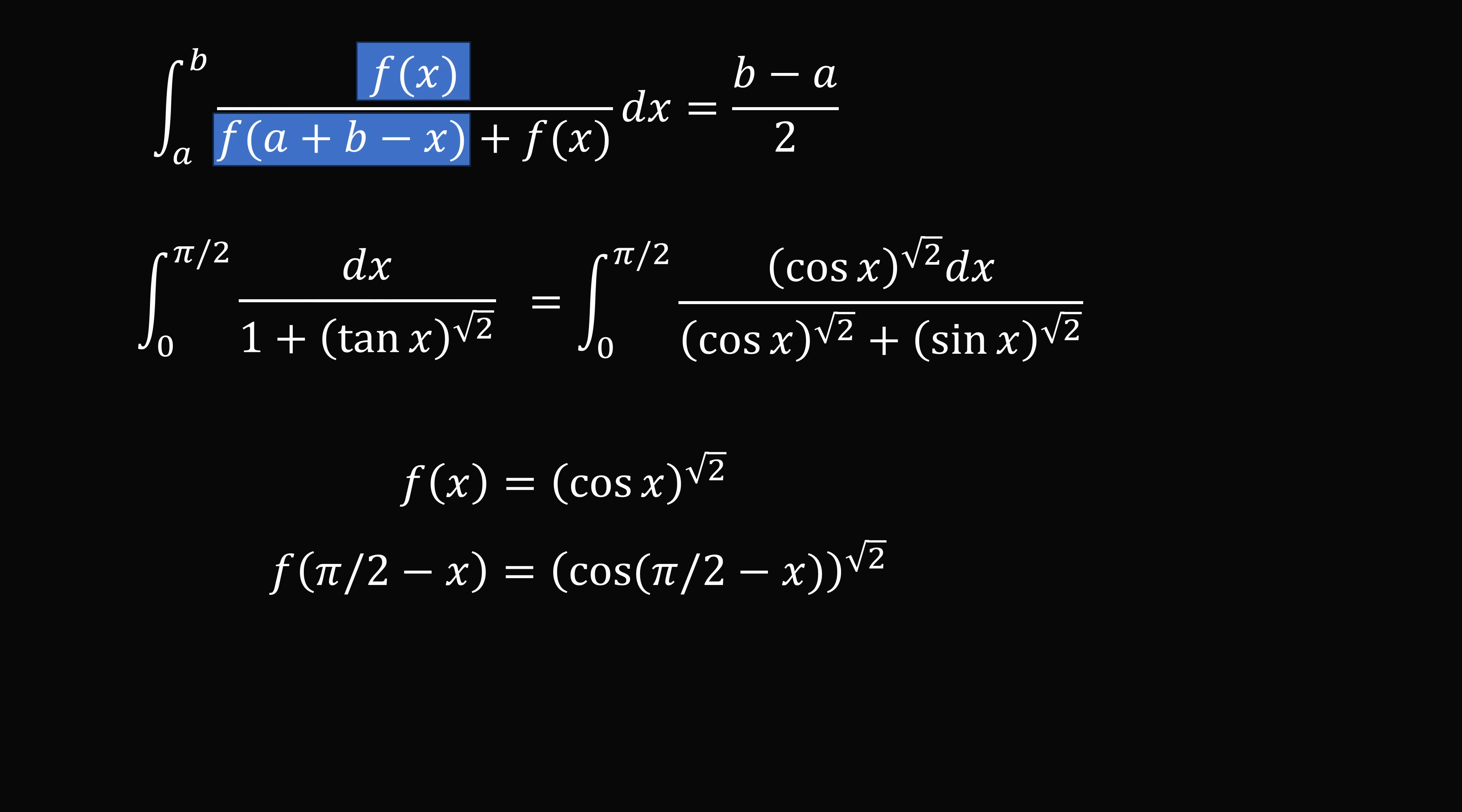So f(pi/2 - x) is equal to cosine of pi over 2 minus x. We want the entire thing raised to the power of root 2. But cosine of pi over 2 minus x is exactly equal to sine of x. So f(pi/2 - x) is equal to sine of x to the power of root 2.